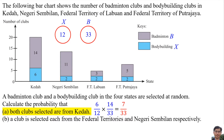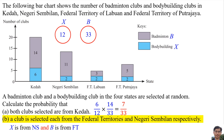Calculate the probability that a club is selected each from the federal territories and Negeri Sembilan respectively. There are two possibilities. The first possibility is that the bodybuilding club is from Negeri Sembilan and the badminton club is from the federal territories. The second possibility is that the bodybuilding club is from the federal territories and the badminton club is from Negeri Sembilan.